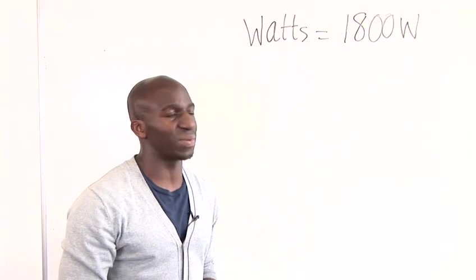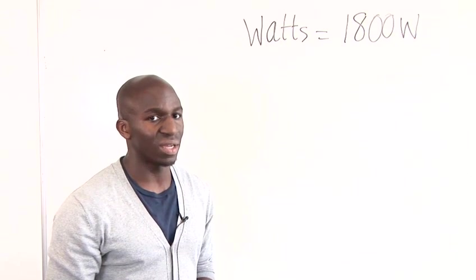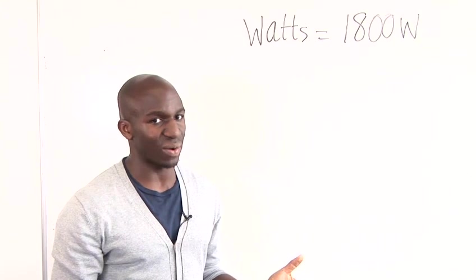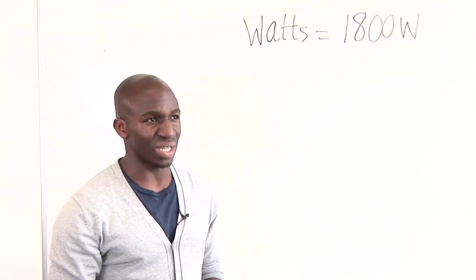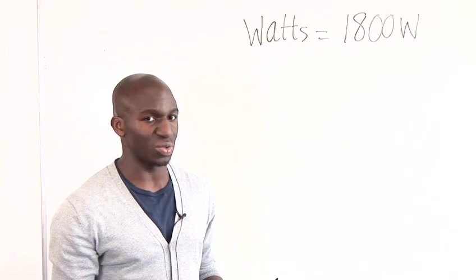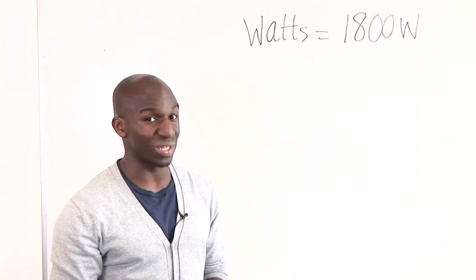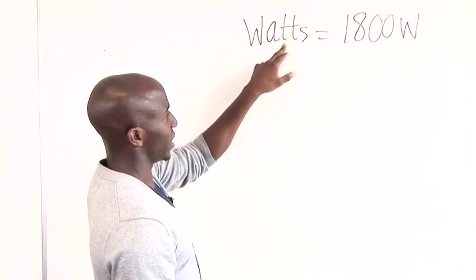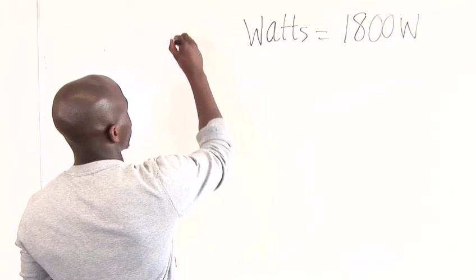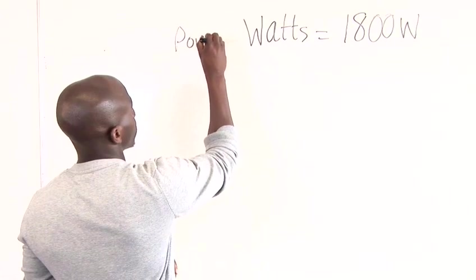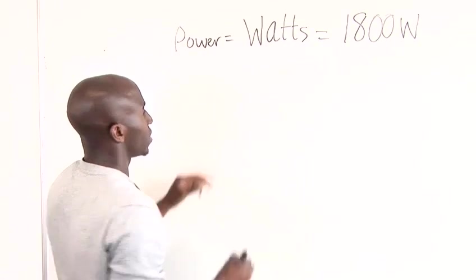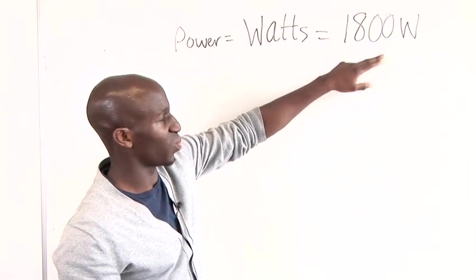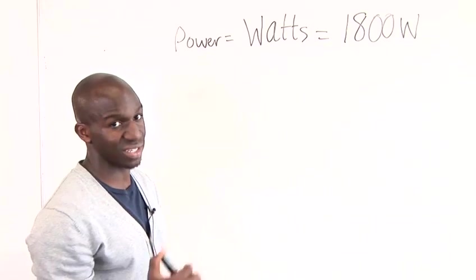If you were given a particular question where it says that the kettle is always used for two hours a day, you might want to say then, what is the kilowatt hour usage per day? That's simple. The first thing you would need to do is take your power reading, which is 1800 watts, and change that into kilowatts.